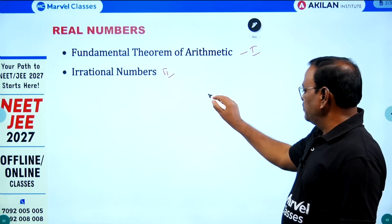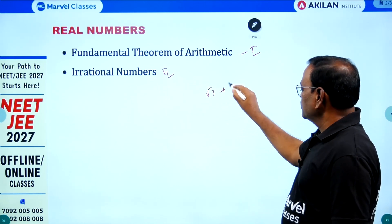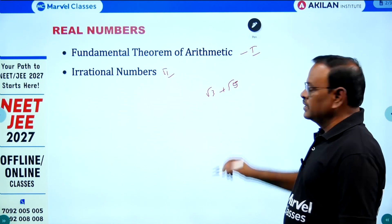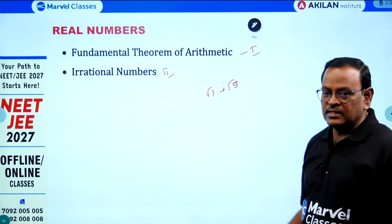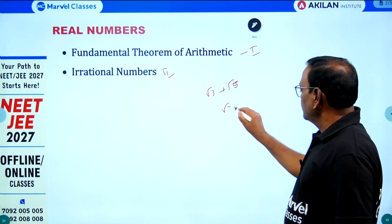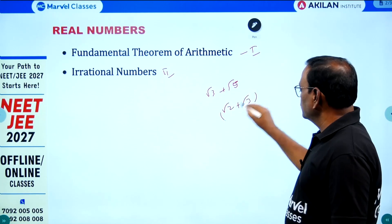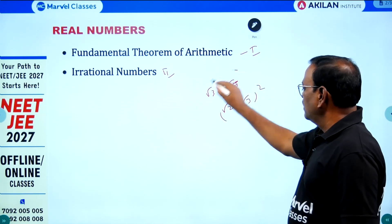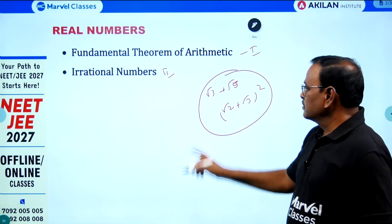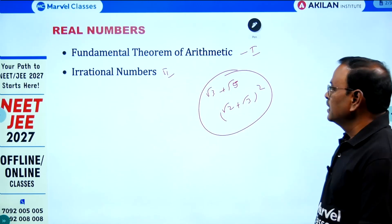Try to prepare these types of questions. For example, root 2 plus root 5 is irrational — these are all HOTS category. Also root 2 plus root 3, the whole square — these are HOTS category. First preference is the Fundamental Theorem of Arithmetic, and second preference is irrational numbers.